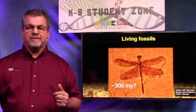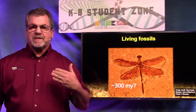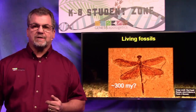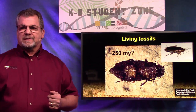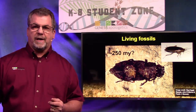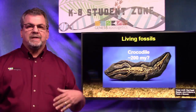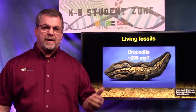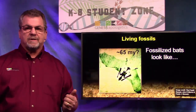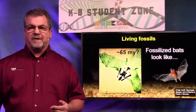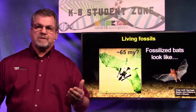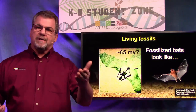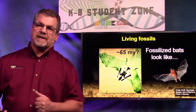And that? If you said dragonfly, you're right. If this thing is 300 million years old, why hasn't it evolved into something different? Why does it look just like dragonflies today? This is a cockroach — let's move on. A 200 million year old crocodile looks just like crocodiles today. Are you starting to see a pattern? Fossilized bats look like bats. In fact, there are no ancestors to bats found in the fossil record — no pre-bats. They appear in the fossil record fully formed, just like God made them.